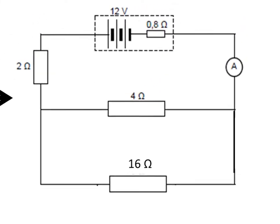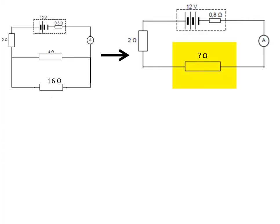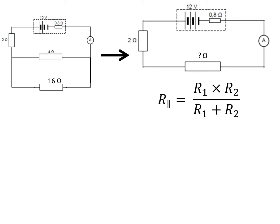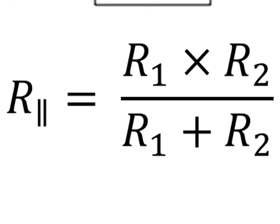Their combined resistance is 8 plus 8 equals 16 ohms. So we have a 4-ohm resistor in parallel with a 16-ohm resistor. Now we need to replace this parallel section with a single resistor which has the same resistance as these two in parallel. Because there are only two resistors in parallel, we can make use of this equation: the effective resistance of the parallel section is equal to the product of the two resistors in parallel divided by their sum.